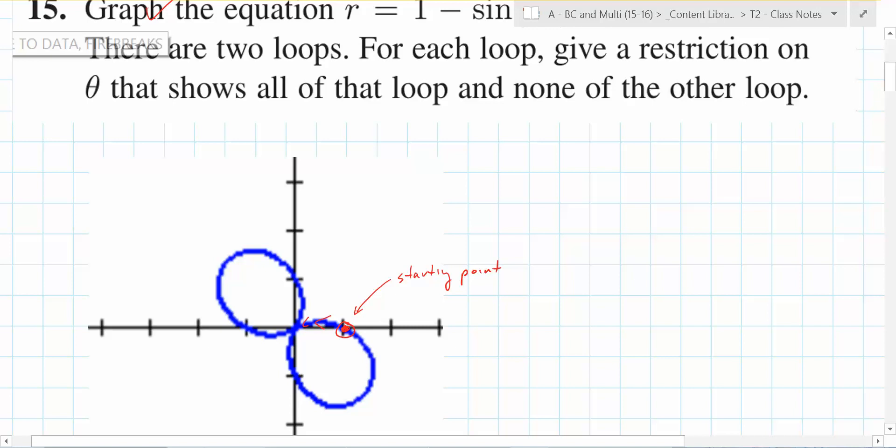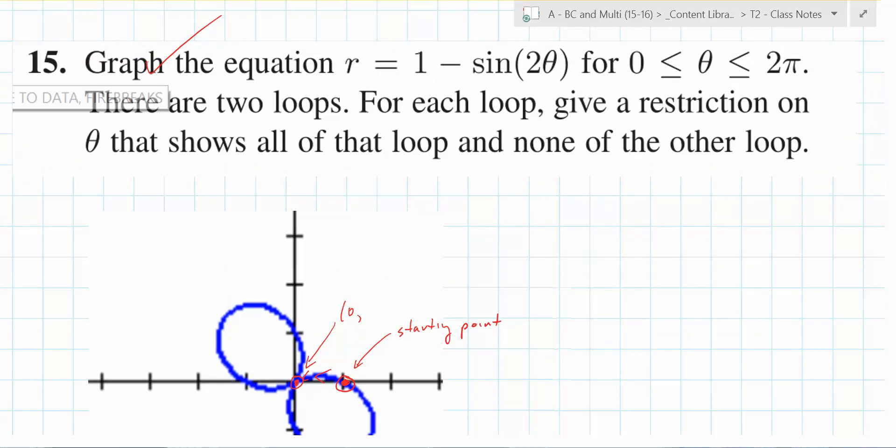So then it's going to, does it hit the, what theta value is that one going to be? So it's 0 what? Pi over 4? Pi over 4, really? I understand. So pi over 4, yeah, because you plug in pi over 4, you get pi over 2. I like it. Sine of pi over 2 is 1. 1 minus 1 is 0, so that's why it's at the origin. Okay, nice.